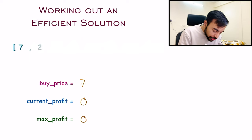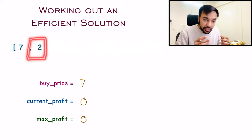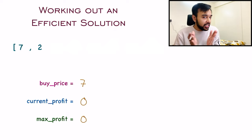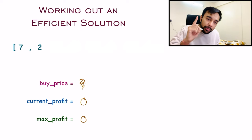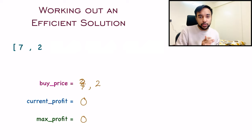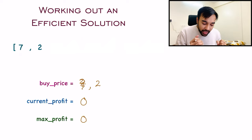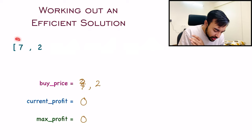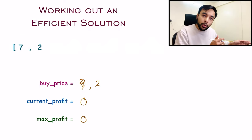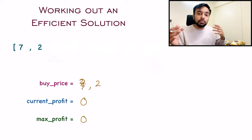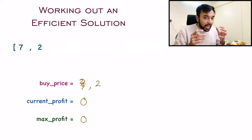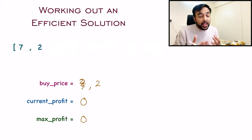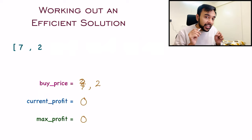You sleep and the next day the price of the stock changes to 2. This looks like an even lower price, and to get a higher profit you want to buy at a lower price. So I will update: I do not want to buy at price 7 — instead I will buy at price 2 because it is lower. But you still cannot sell it, since the price of 7 was in the past and you cannot go back. You need to wait for a future price increase. So the current profit and max profit remain 0, but you have a lower buying price now.